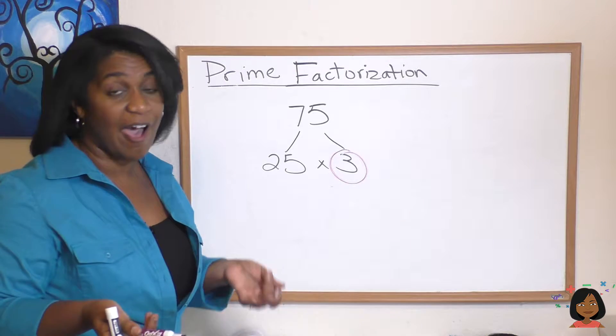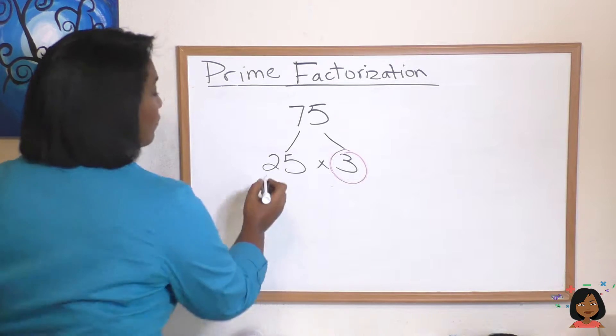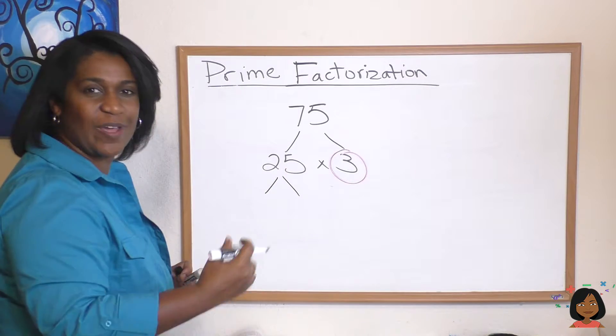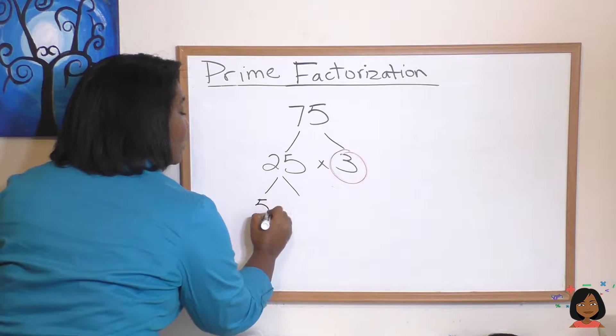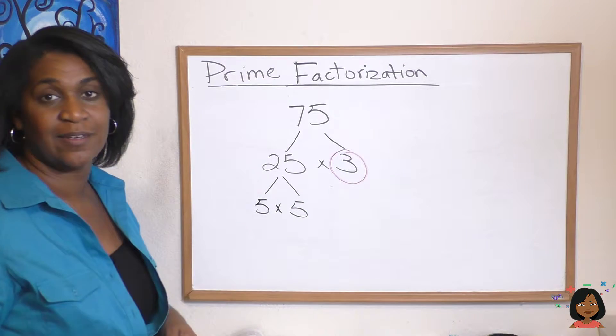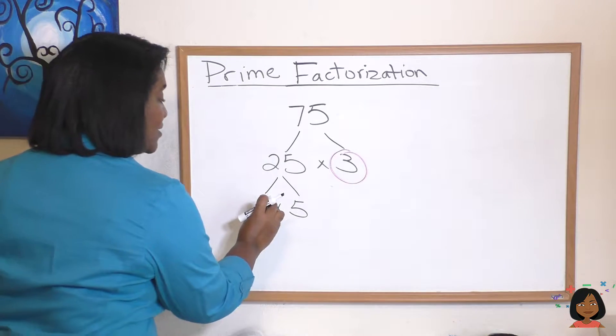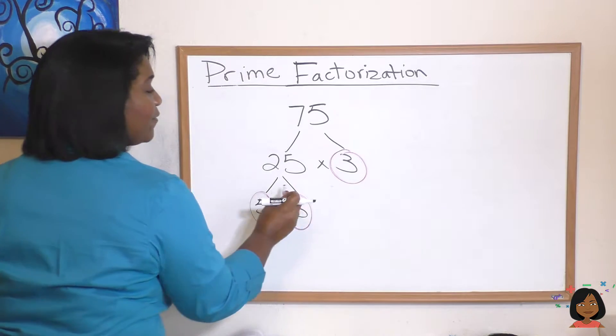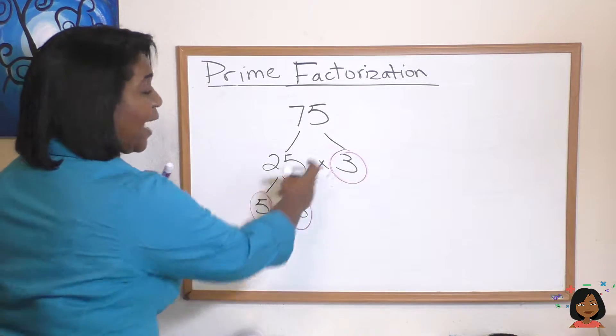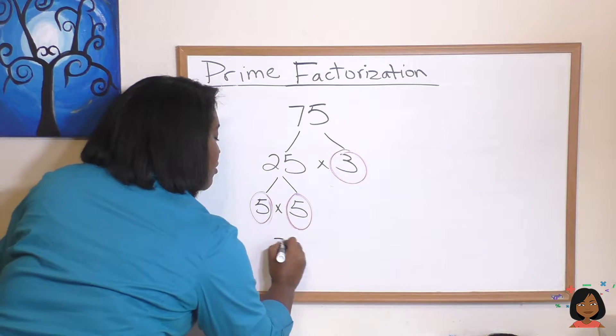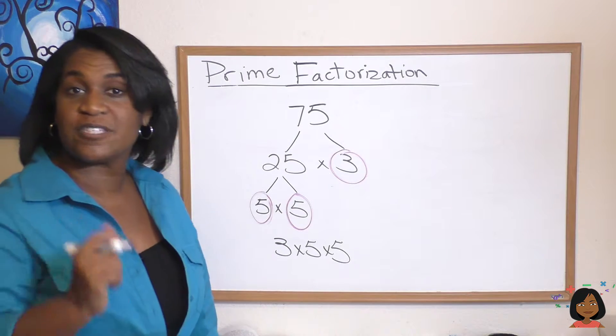But 25 is not prime. 25 has factors other than 1 and 25. So let's factor the 25. And I just put these two little branches on it. That's why it's called a factor tree. What times what is 25? 5 times 5 is 25. And now I look at my numbers again. Are these prime numbers? Yep. 5 is a prime number. That means I have reached the end of the road. 5 times 5 times 3. And how I write the prime factorization is just like that. But I'm going to start with a small number. 3 times 5 times 5 is the prime factorization for 75.